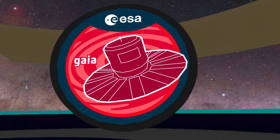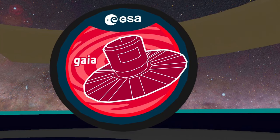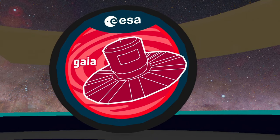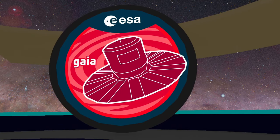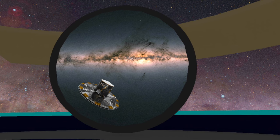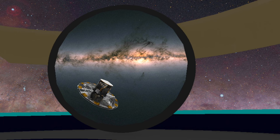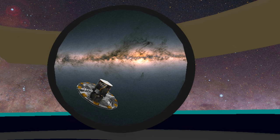That has now changed with the European Space Agency's Gaia spacecraft, the most accurate surveying instrument ever made. Gaia has launched the greatest cartographic adventure since the European discovery of the New World.